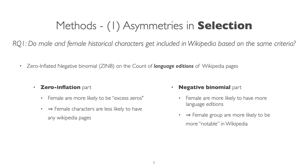The negative binomial part of the model tells us the female group are more likely to be more notable in Wikipedia because they are more likely to have more language editions compared to their male counterparts.